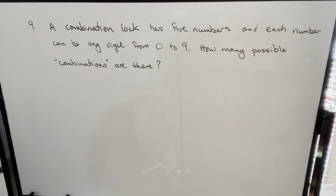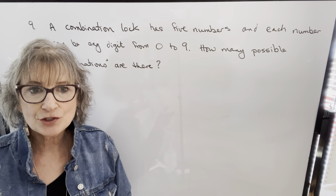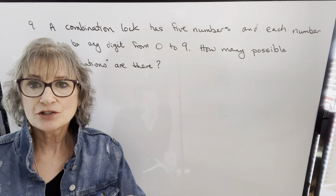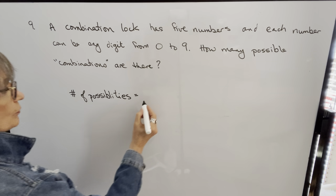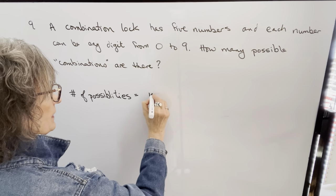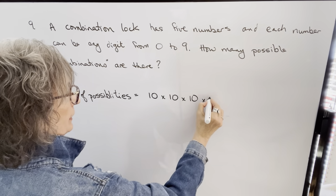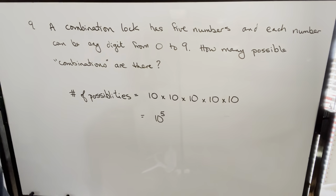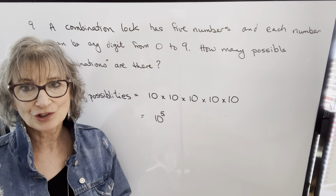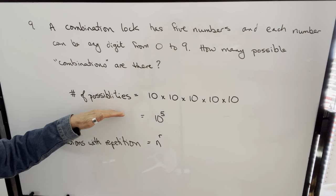The last question says: a combination lock has 5 numbers and each number can be any digit from 0 to 9 — how many possible combinations are there? Be careful: despite the word 'combination,' this is actually a permutation. However, repetition is allowed — once you've used a digit, you can use it again. So we have 5 positions and 10 digits to choose from each time: 10 for the first number, 10 for the second, and so on. We have 10 to the fifth possibilities, which gives 100,000.